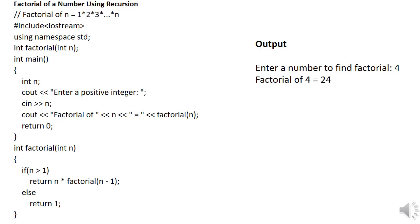The final factorial function returns a value of 1. It passes 2 into 1 to the previous state, then 3 into 2 to the previous state, then 4 into 6 to the previous state. The values propagate back through each recursive call. So you will get the result 24.